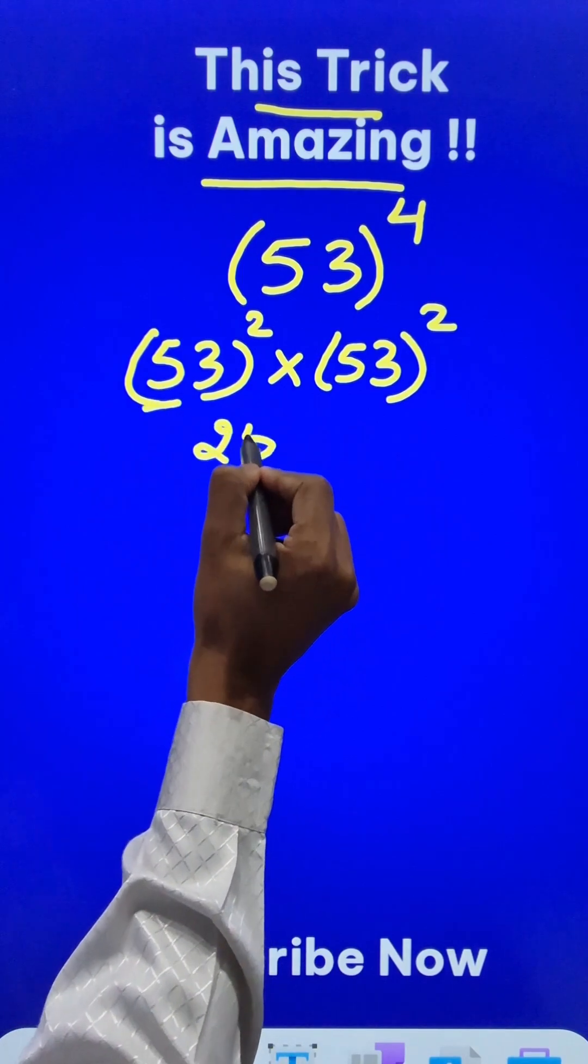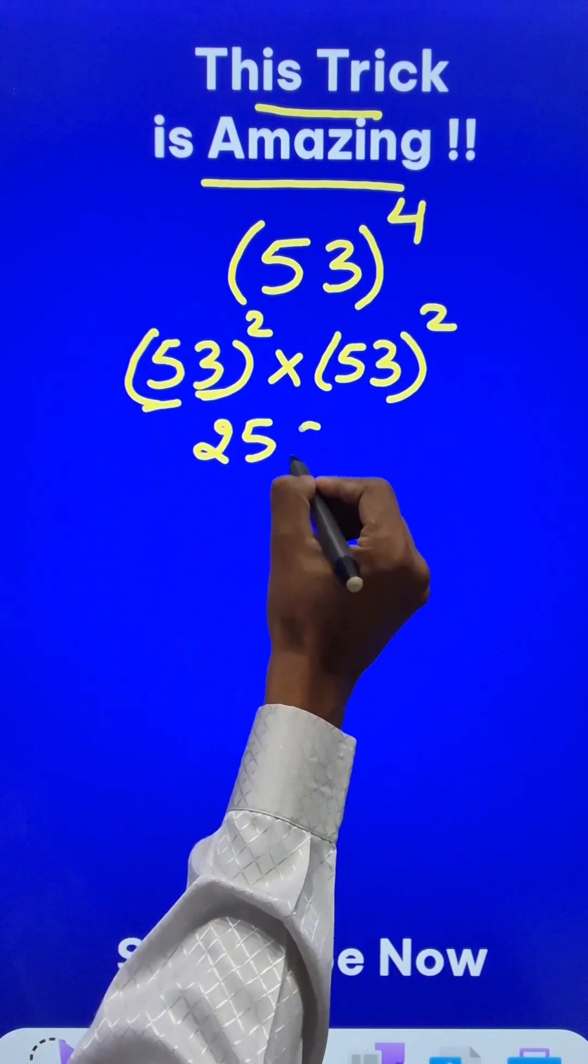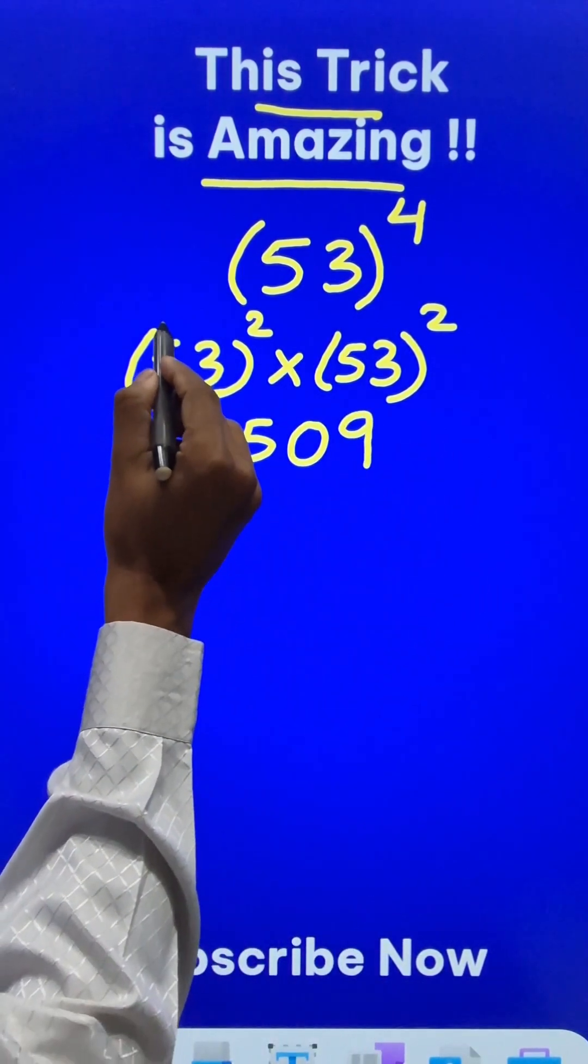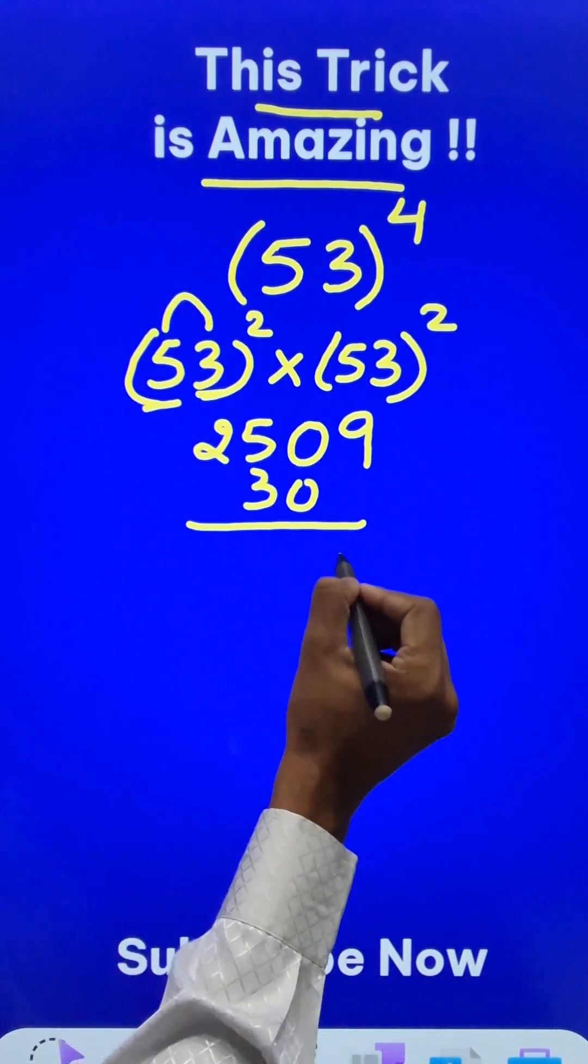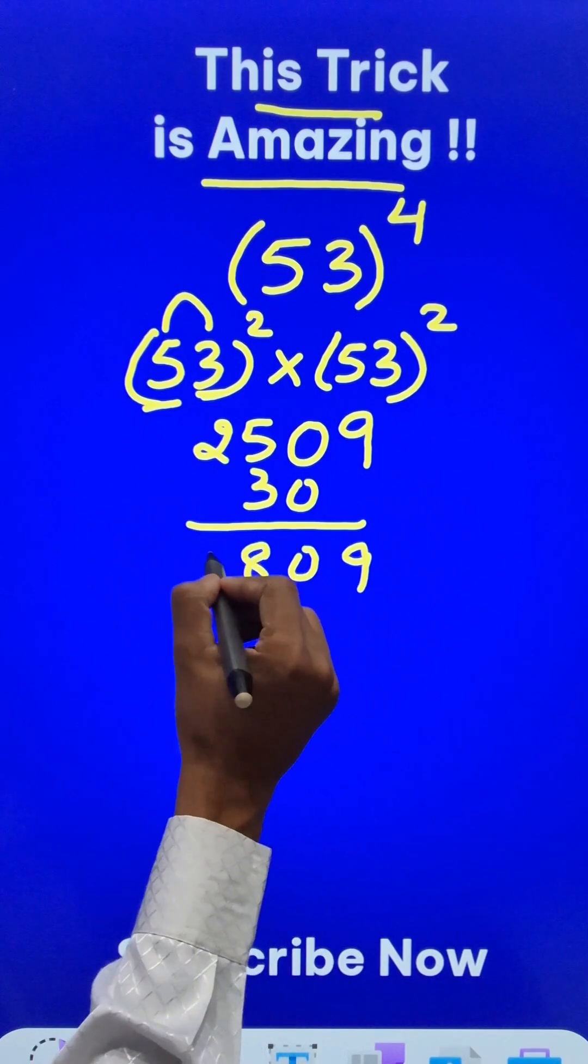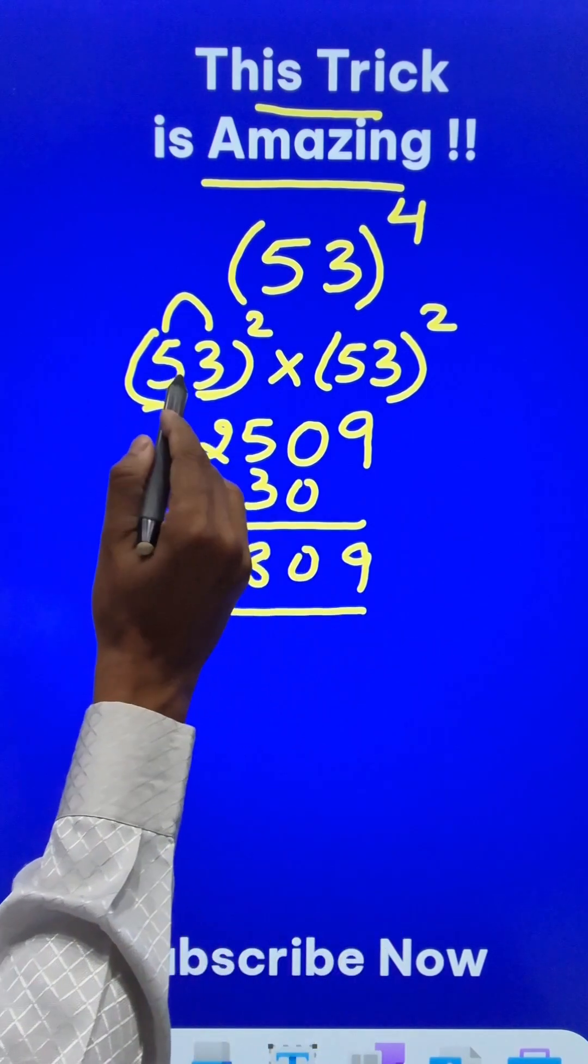5 squared is 25 and 3 squared is 9, I will write it as 09. And then 5 times 3 is 15, double of 15 is 30, write it in between here. And then just add vertically, you will get 2809 as the square of 53.